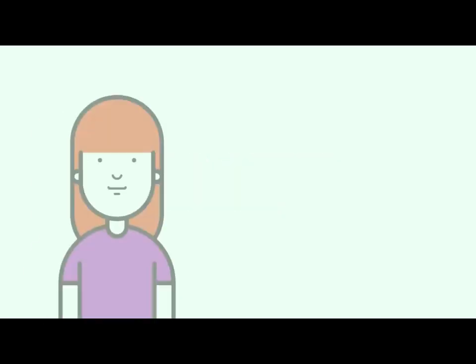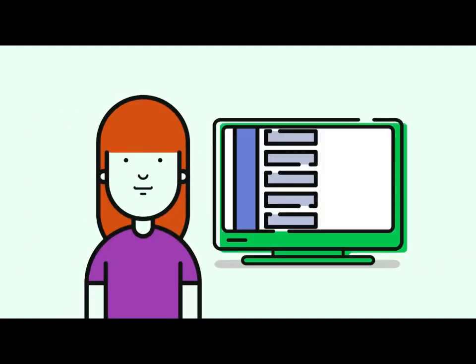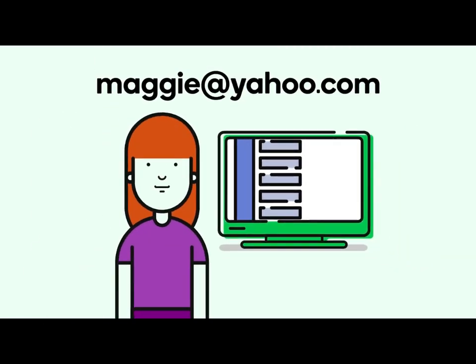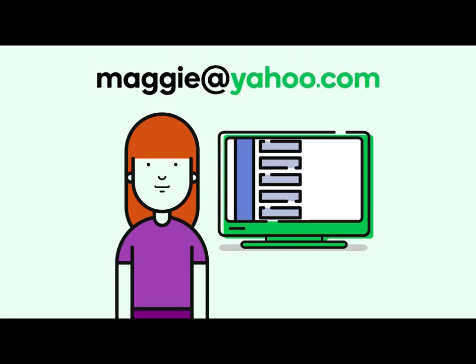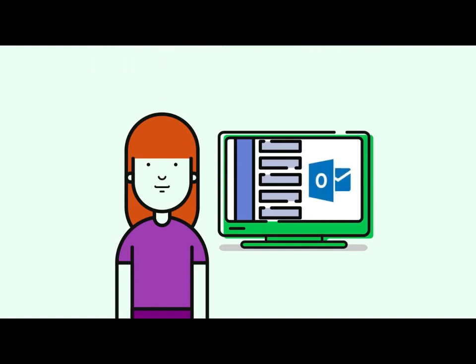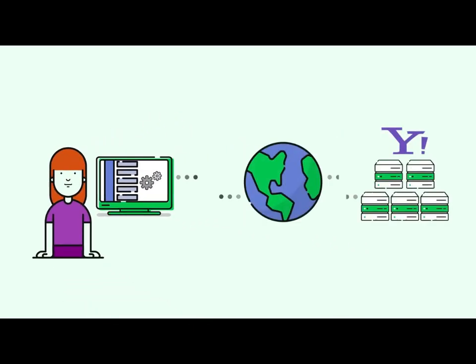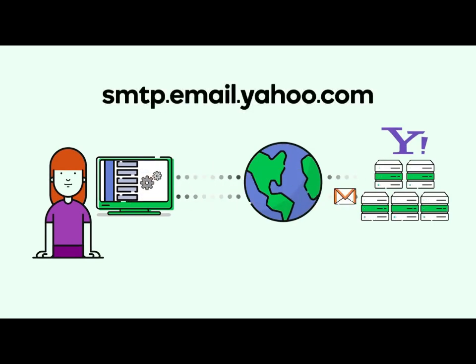Let's focus on the send mail process and the role SMTP servers play in it. Meet Maggie. Her email address is maggie@yahoo.com. Though Maggie is using Yahoo as her free email service provider, she likes to use the email client Microsoft Outlook for composing, reading, and sending her email. To make sure Outlook can communicate with Yahoo's mail servers, she entered Yahoo's email server settings when she configured MS Outlook.